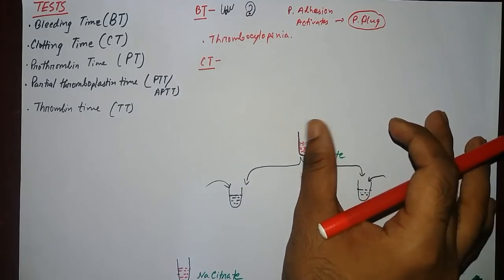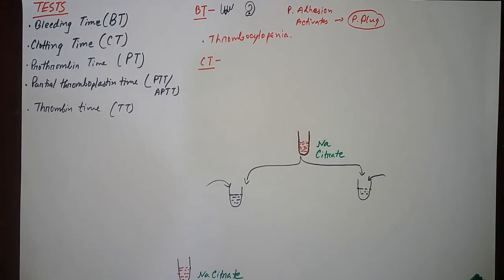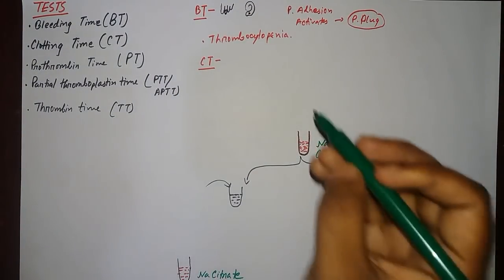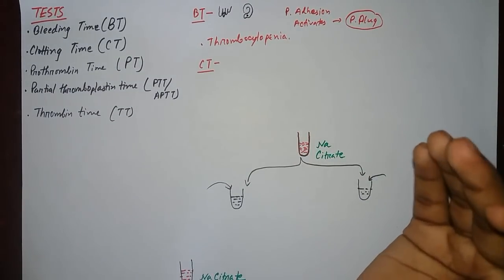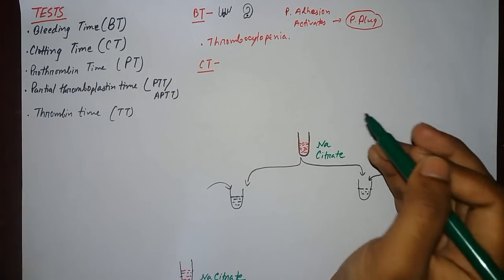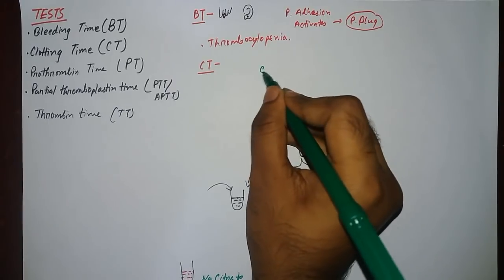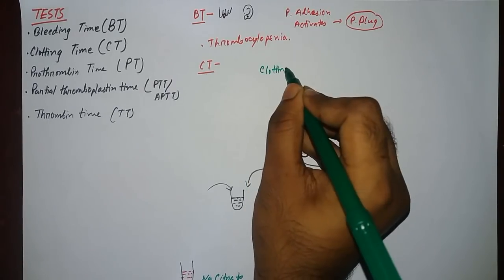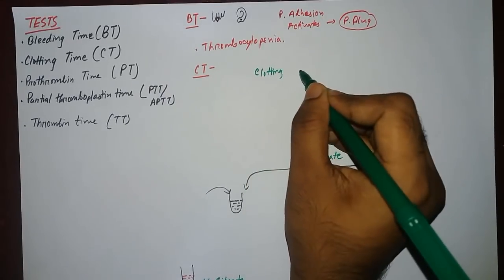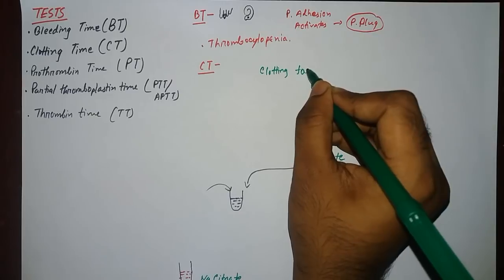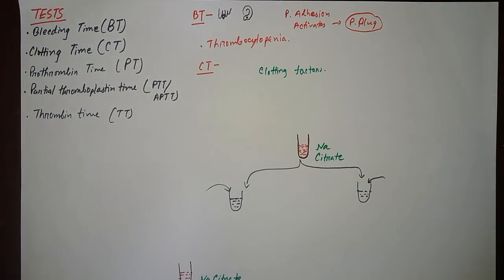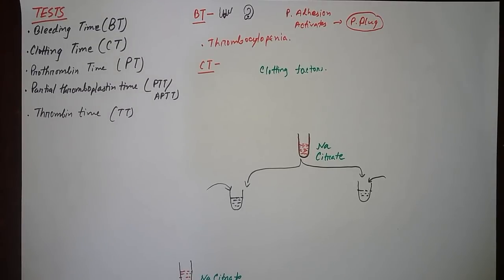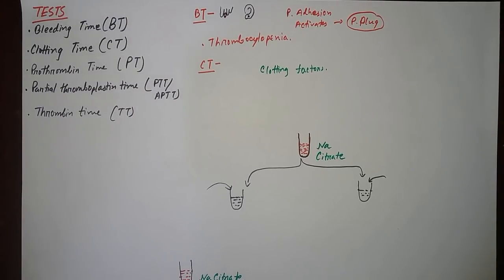Another test is clotting time. Clotting time is the time required for blood to form a clot. The clot is formed by clotting factors, and there are several clotting factors working behind it. The clotting factors form the clot via the extrinsic pathway or the intrinsic pathway.